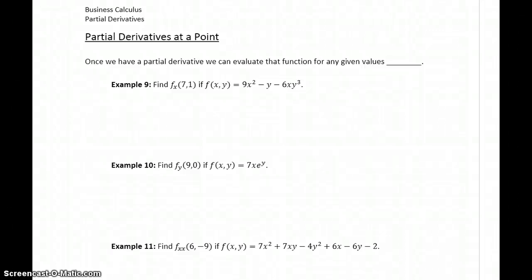Partial derivatives still have essentially the same meaning that derivatives did when dealing with functions of one independent variable. A partial derivative, when we calculate it, is still a function that gives us the rate of change of that function for any given point, or in this case, a pair of points (x, y). Once we have partial derivatives, the next thing we want to look at is evaluating that partial derivative at some specific point (x, y).